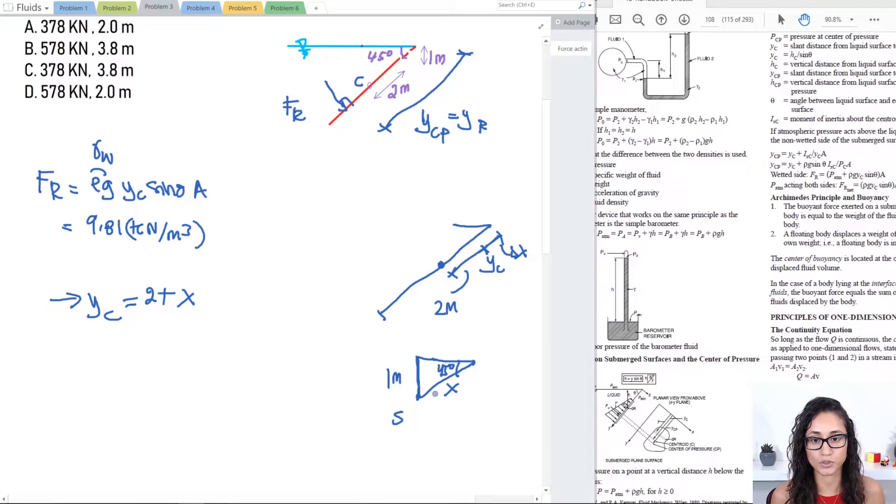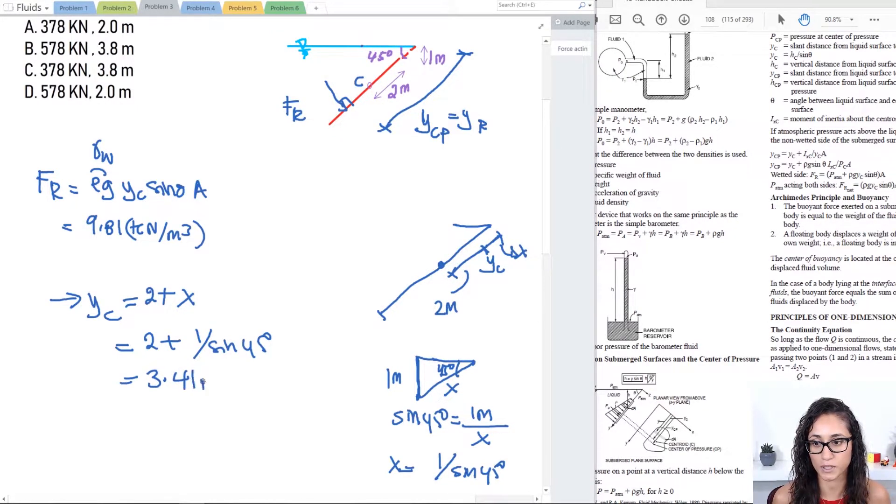So we're going to do sine 45 equals the opposite which is 1 meter divided by X. So X is going to be 1 divided by sine 45. So this is going to be 2 plus 1 over sine 45 and this is going to be 3.41 meters. Okay so let's go back to our equation.